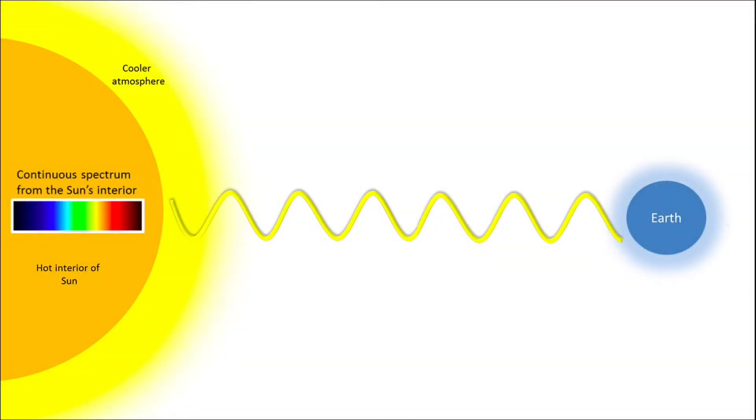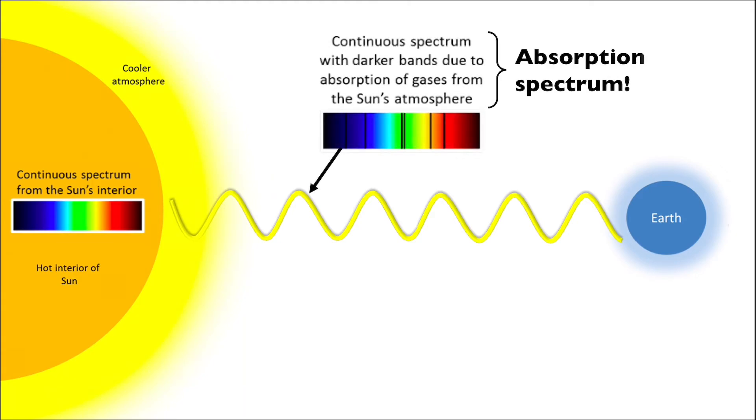When a star shines, the light is created in the very central core of the star, creating a full continuous spectrum of light in the process. When this light passes through the various layers of the star on its way out, it encounters the cooler atmospheric outer layers of the star. The star's atmosphere absorbs certain wavelengths of light, leaving those telltale gaps in what used to be a continuous spectrum, so we instead see an absorption spectrum coming from that star.